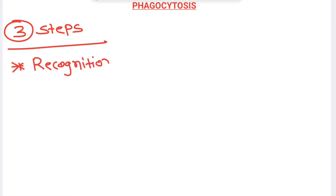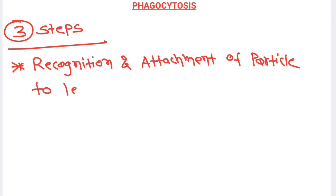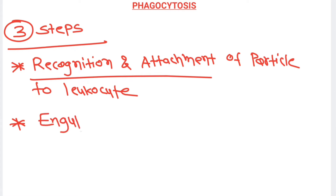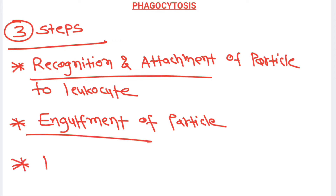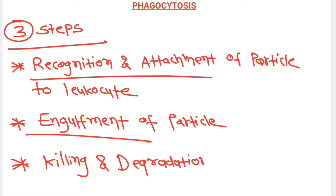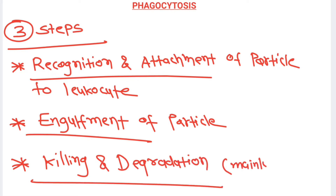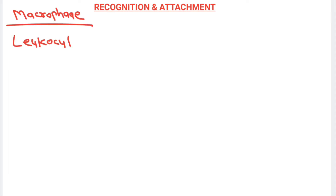Phagocytosis is a three-step process. First, whenever a foreign particle or bacteria enters our body, it will be recognized and attached to the leukocyte — the neutrophil or macrophage. After recognition and attachment, the leukocyte engulfs that particle, and after engulfment the leukocyte performs killing and degradation of the microbe, mainly by reactive oxygen species.